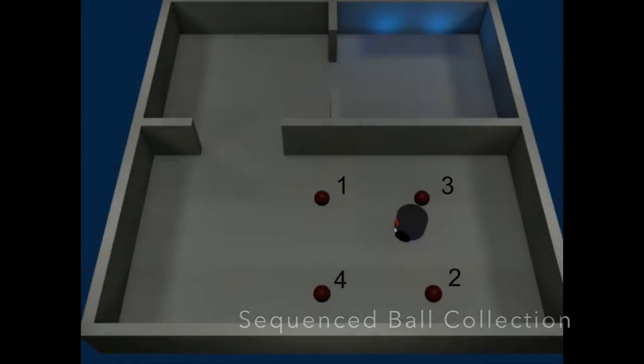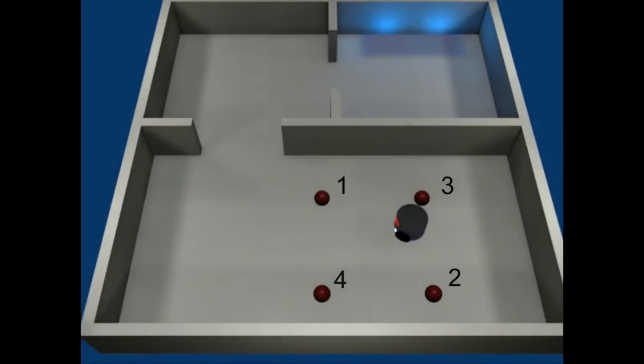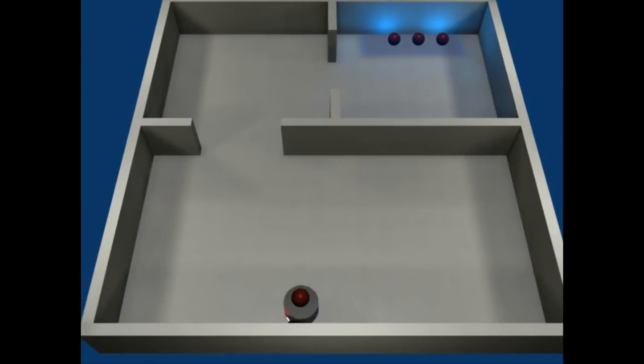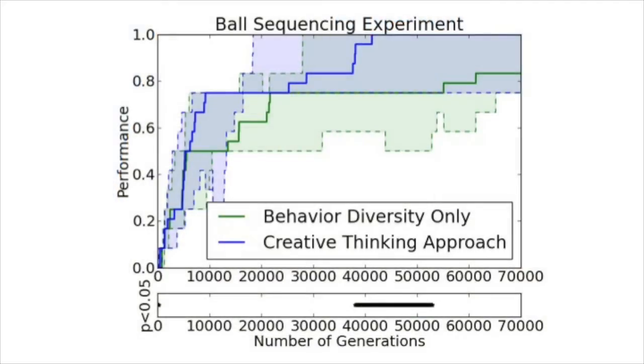In this version of the ball collection experiment, the balls must be collected in a specific order, increasing the difficulty of the problem. On this problem, the creative thinking approach performs significantly better than behavioral diversity only for a range of generations.